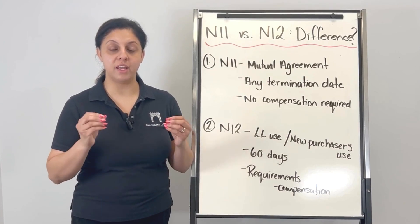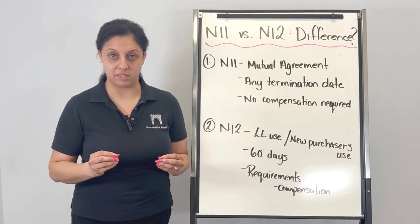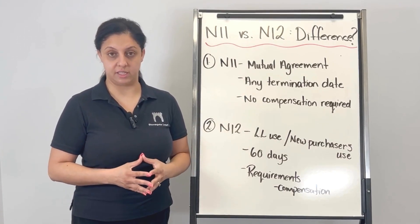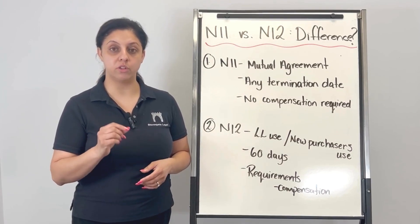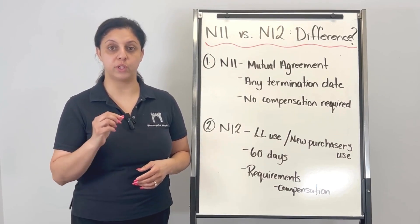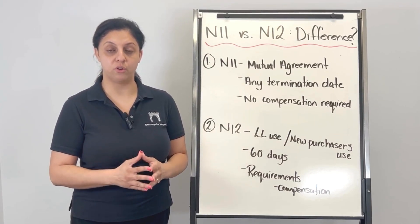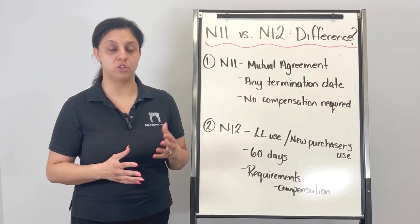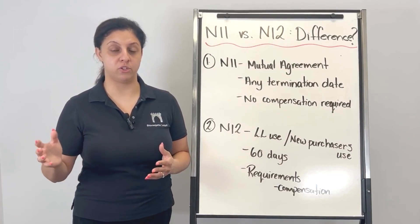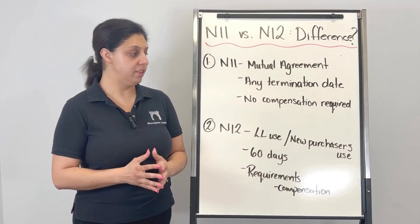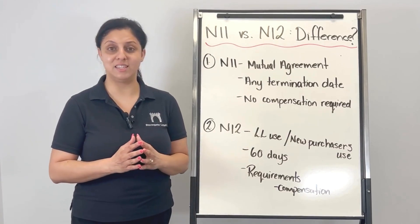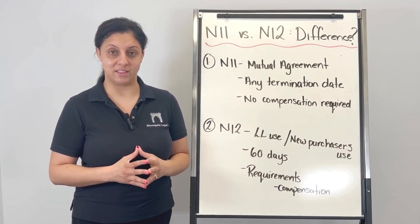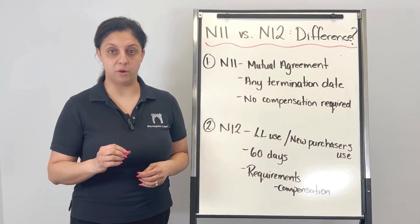The N12, however, is not an agreement. It is a notice to end the tenancy because the landlord or the new purchaser requires possession for their own use, or the use of their family members — child, parent, or caregiver. The N12 has a 60-day notice requirement to end the tenancy. That is a requirement.